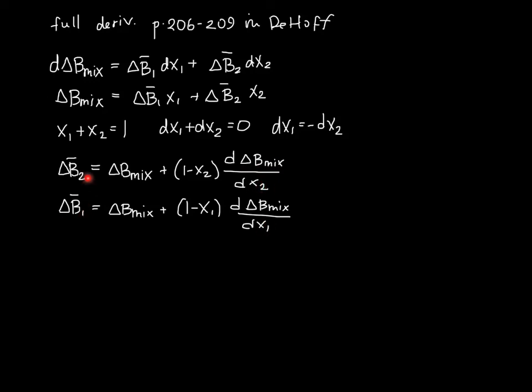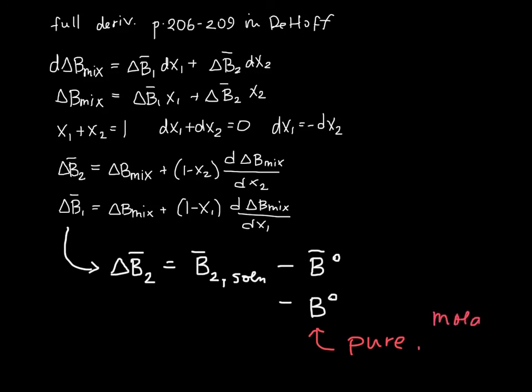This might not look obviously to you like a partial molar property, so let's just write this out so we see what it really means. So delta B2, this is the partial molar B2 in the solution minus the partial molar B in the pure state. And really this is just then the molar B. Because if this is pure, then adding one more mole just adds one more mole of that property. So this is just the molar B here that we're looking at.